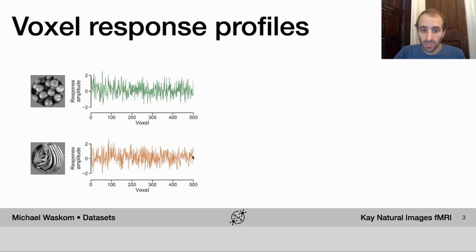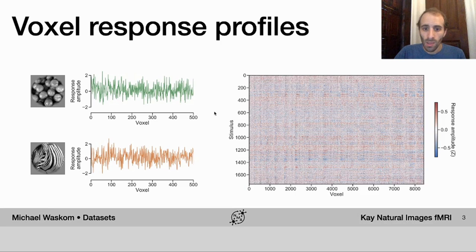Different images will evoke different patterns of responses across voxels. And if you can model those patterns of responses in a way that captures the differences meaningfully, you might be able to say something about how the brain is responding to and representing the content in each image.